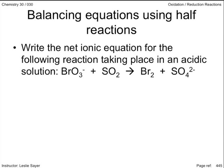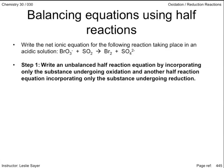The first step is to write out the half reactions. Some, if not all, of the components of this reaction may not be in your data book, so we compose our own half reactions. Step one, write an unbalanced half reaction equation by incorporating only the substance undergoing oxidation and another half reaction equation incorporating only the substance undergoing reduction.